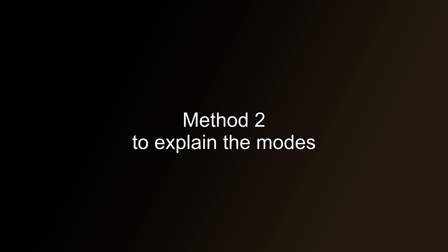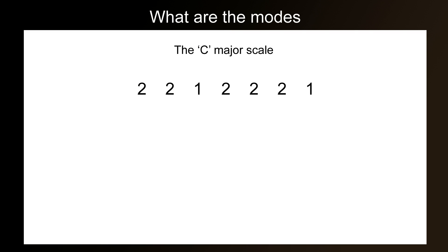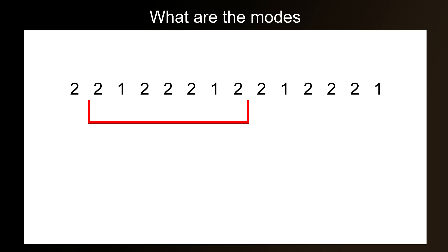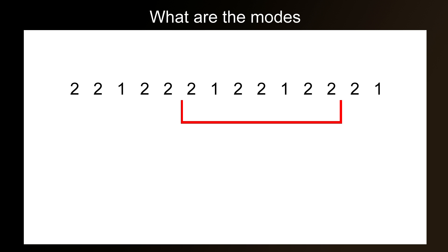Method 2 for explaining modes would be to use the pattern we originally used to explain the major scale, and to help us understand key signatures. And that pattern was 2, 2, 1, 2, 2, 2, 1. If we extend this over 2 octaves, we can then see that by moving the scale one shift up, we create a whole series of new scales. They're all based around the pattern of the major scale, but each one is different. Again, this is the modes.